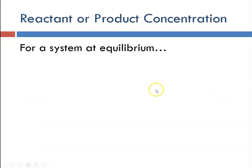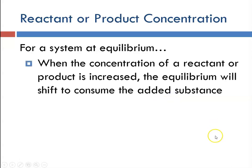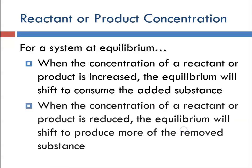For reactant or product concentration: with a system at equilibrium, when the concentration of a reactant or product is increased, the equilibrium will shift to consume whatever is added, shifting either to the left or to the right. When the concentration of a reactant or product is removed, the equilibrium will shift to produce more of whatever was removed, again shifting either to the left or to the right.